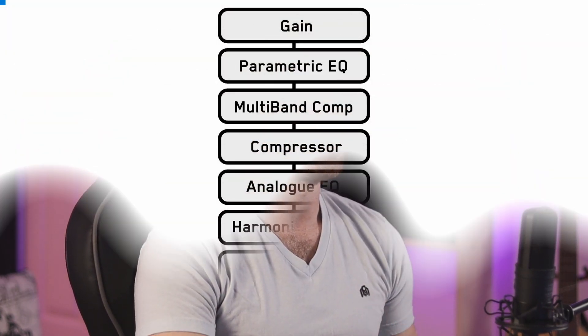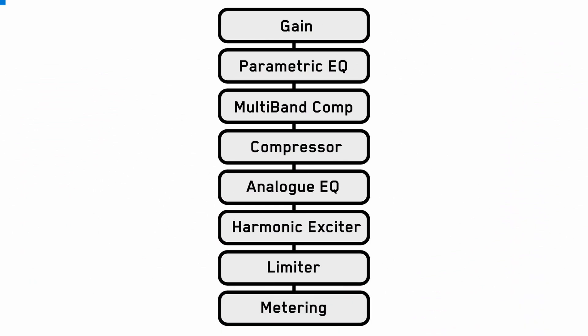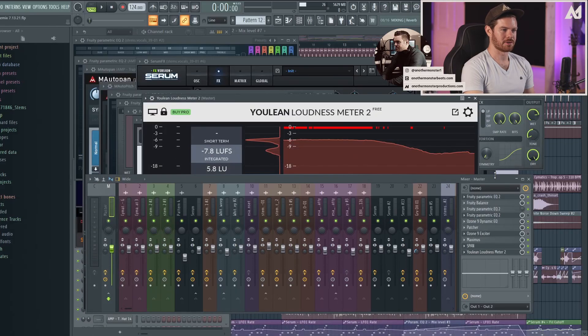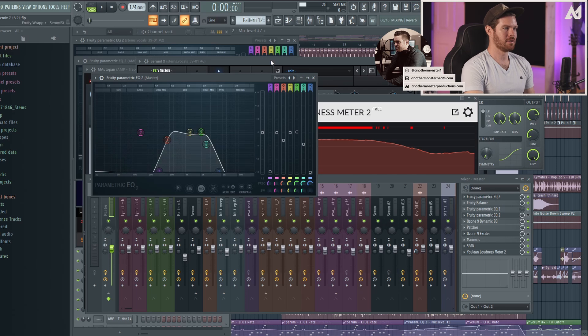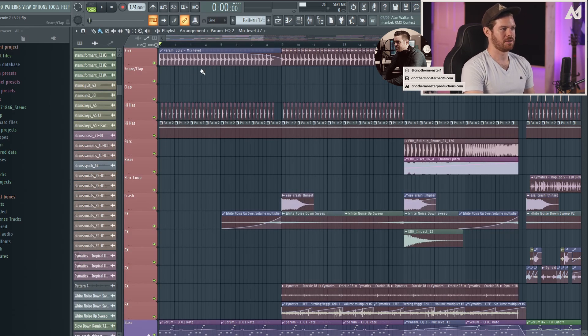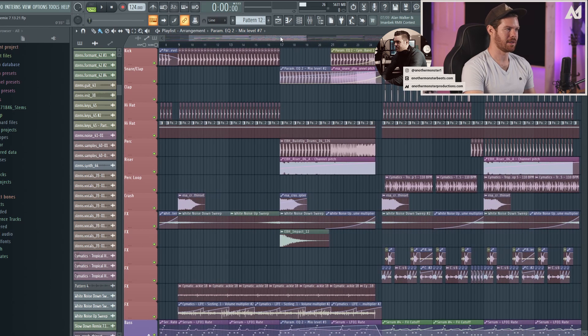The last thing I want to mention before we get into the actual project is this chart, which is an example of what a mastering chain could look like. In my opinion, the mastering process should be as minimal as possible — you want to do the least amount to make your final master sound as good as possible. Generally speaking, you'll have some sort of gain plugin, followed by a parametric EQ, then maybe some multiband compression, possibly stacked with another compressor, followed by a harmonic exciter, a limiter, and then your metering. Now let's go ahead and take a look at my mastering chain, and first let's take a listen to the track.